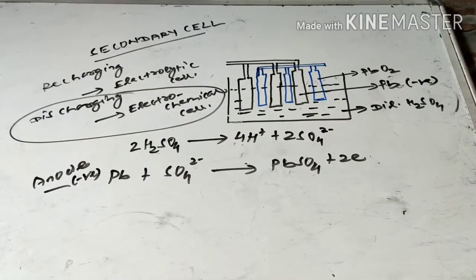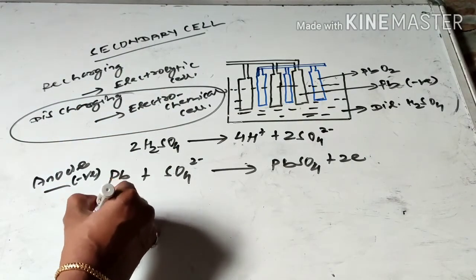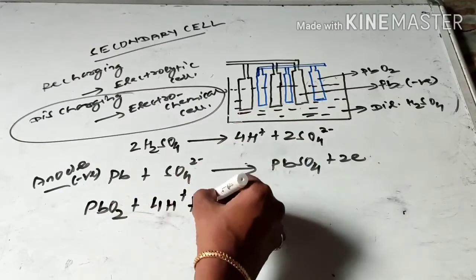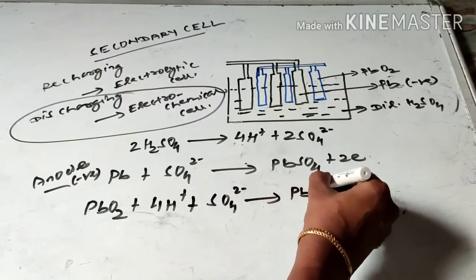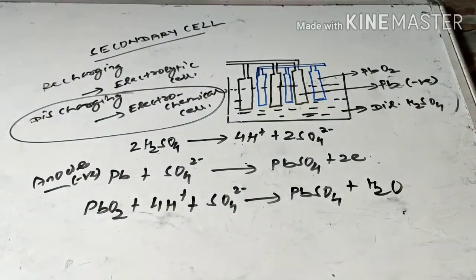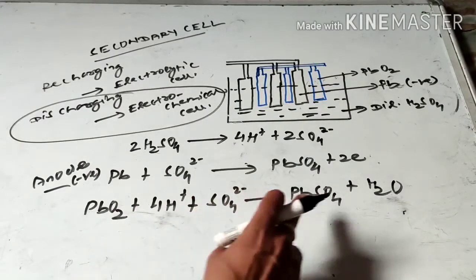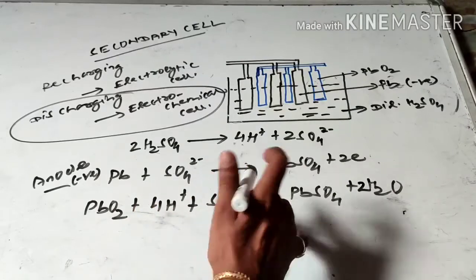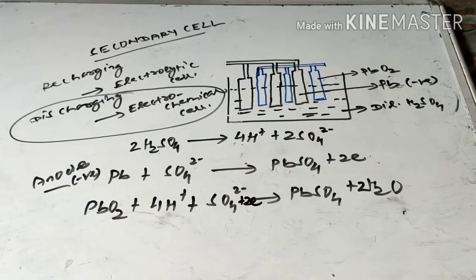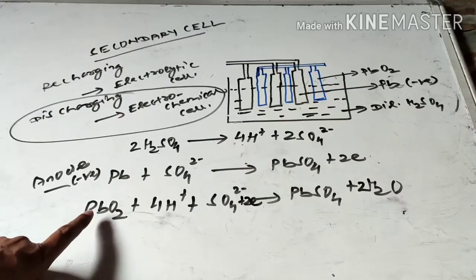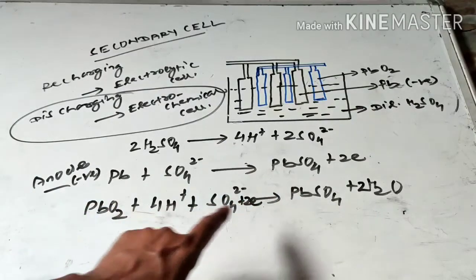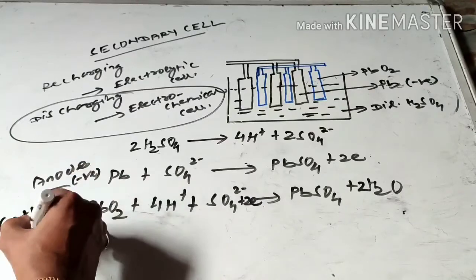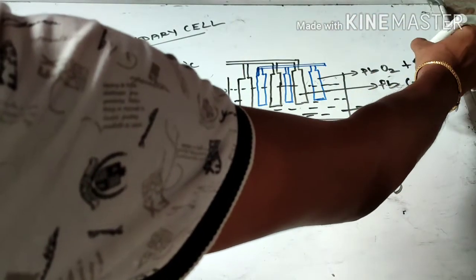The lead dioxide reacts with 4H⁺ ions and another SO₄²⁻ ion and is also converted to lead sulfate with release of water. Balancing the equation: PbO₂ + 4H⁺ + SO₄²⁻ + 2e⁻ → PbSO₄ + 2H₂O. This is the reduction reaction — lead oxidation number goes from +4 to +2, so lead undergoes reduction. Lead dioxide acts as the cathode, and in the electrochemical cell the cathode is positive.